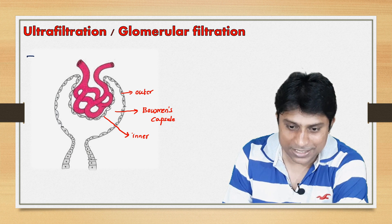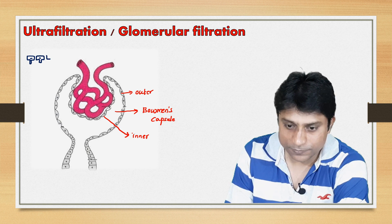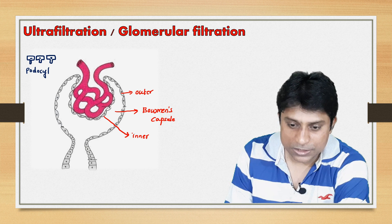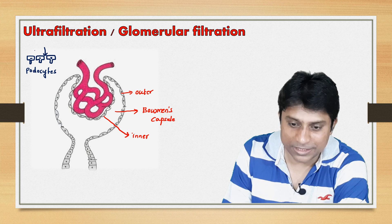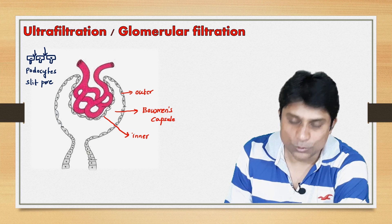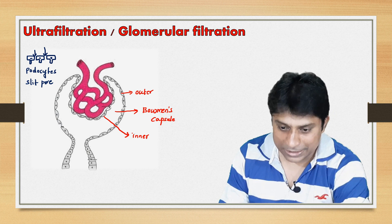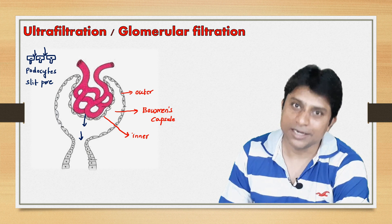These are flat squamous cells with foot processes. These squamous cells are called podocytes. The podocytes have pores in between called slit pores. Through the slit pores, all the plasma that gets filtered from the lumen of the cup enters into the tubular part of the nephron.